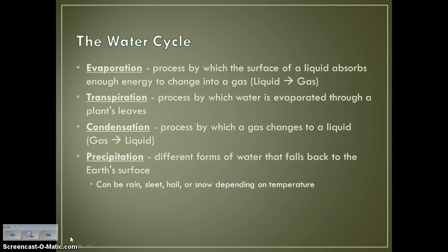Evaporation is the process by which the surface of a liquid absorbs enough energy to change it into a gas — you're going from a liquid to a gas. Transpiration is a special type of evaporation that happens through a plant's leaves. We're still going from the liquid inside the leaf and it's being released as a gas outside through what's called stomata — we'll learn about that later.